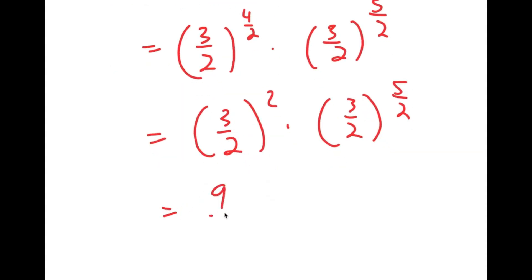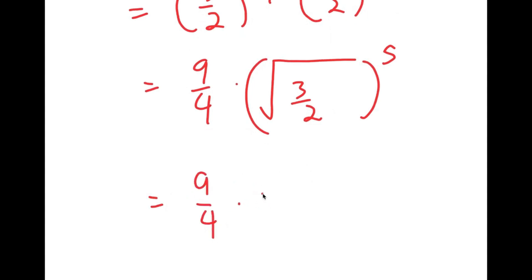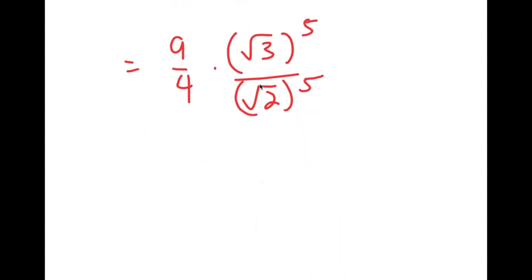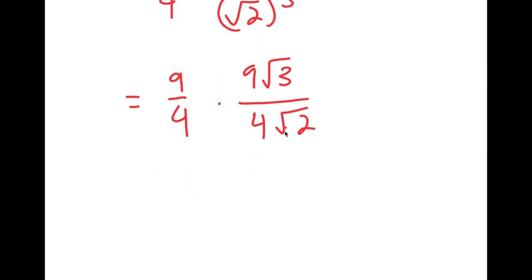And 3 over 2 squared is equal to 9 over 4. So I get 9 over 4 times 3 over 2 to the power of 5 over 2, which is the same thing as the square root of 3 over 2 to the power of 5. This is equal to 9 over 4 times the square root of 3 to the power of 5 over the square root of 2 to the power of 5. The square root of 3 to the power of 5 is equal to 9 root 3, and the square root of 2 to the power of 5 is equal to 4 root 2. So I have 9 over 4 times 9 root 3 over 4 root 2, which is equal to 81 root 3 over 16 root 2.